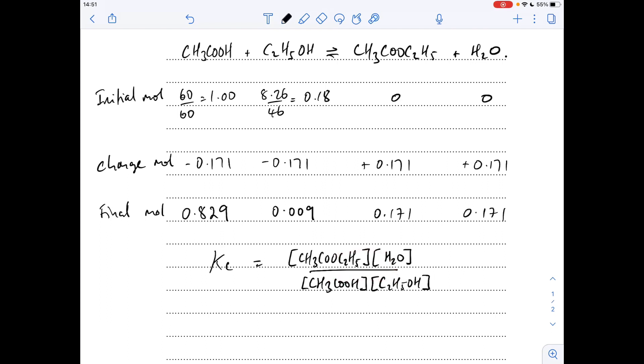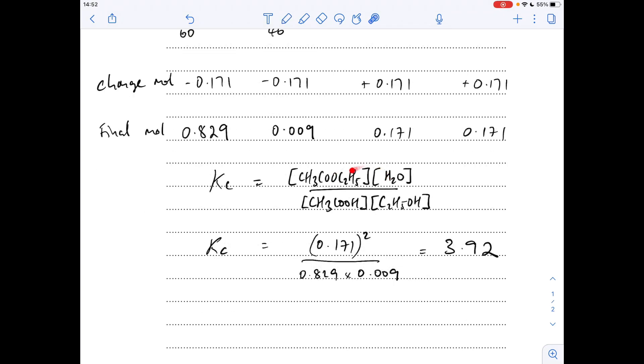Let's put the numbers in. They're both the same, remember, 0.171, so I've just squared that on the top divided by 0.829 times 0.009. So the numerical value of Kc is 3.92.